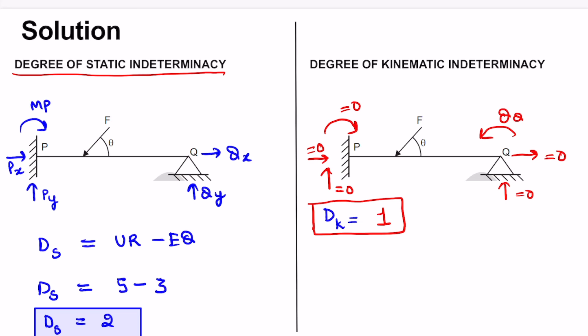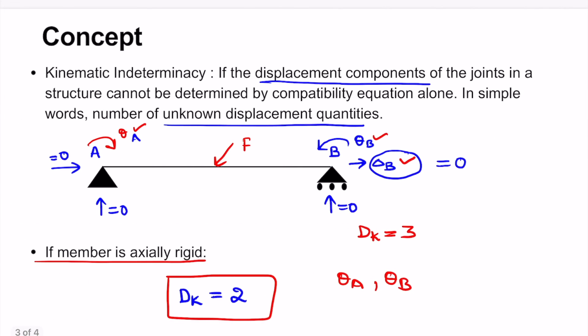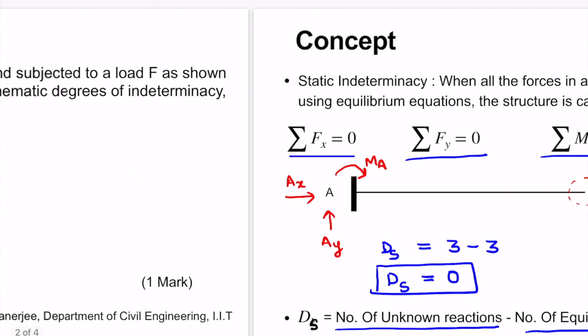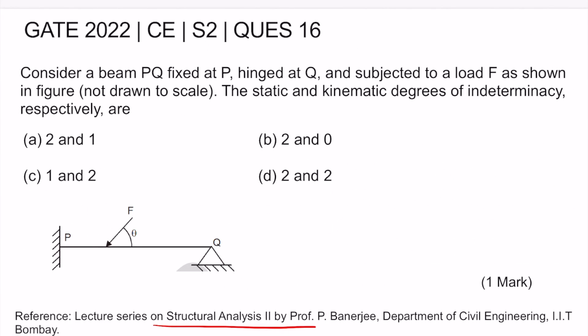Therefore, the final solution is: degree of static indeterminacy is two and degree of kinematic indeterminacy is one. This corresponds to option number one.